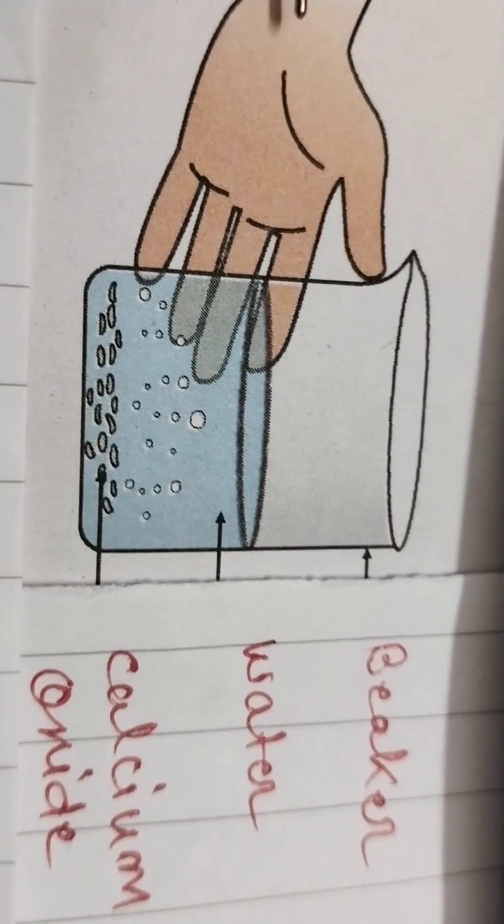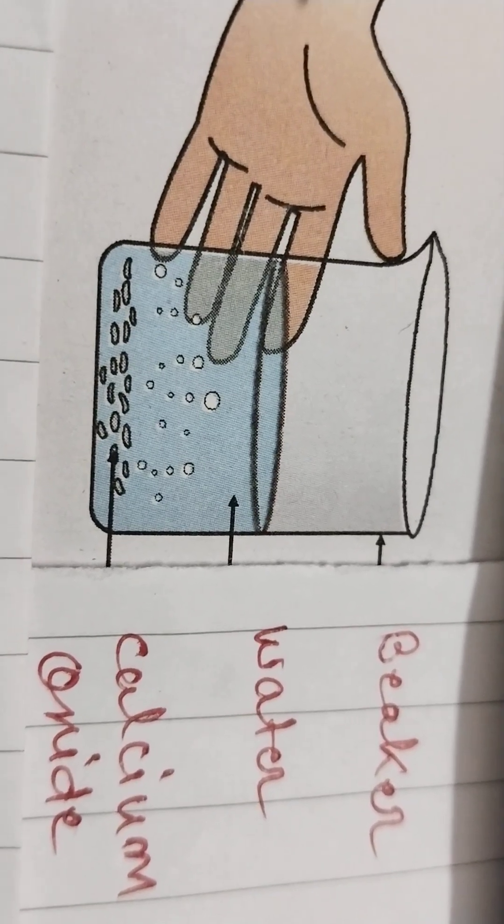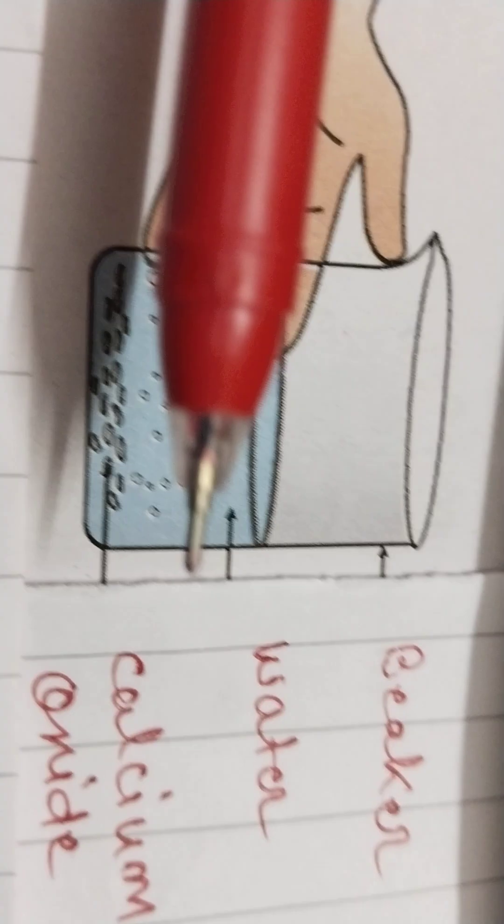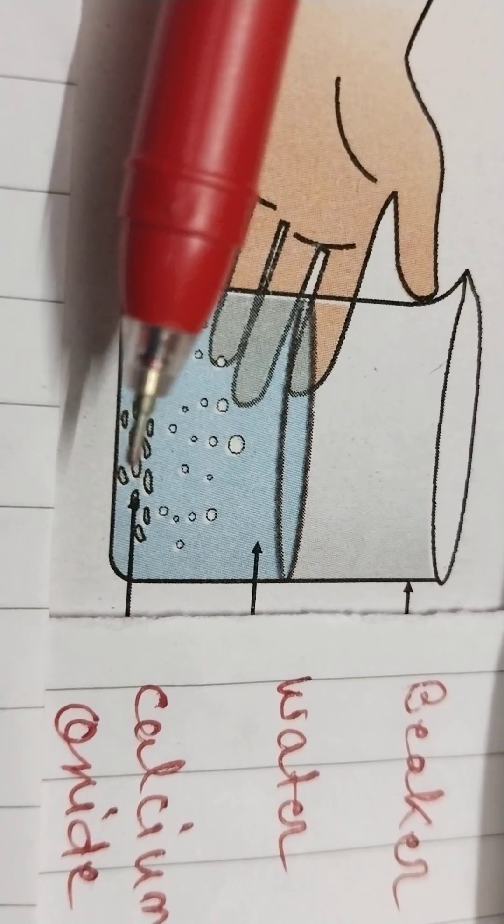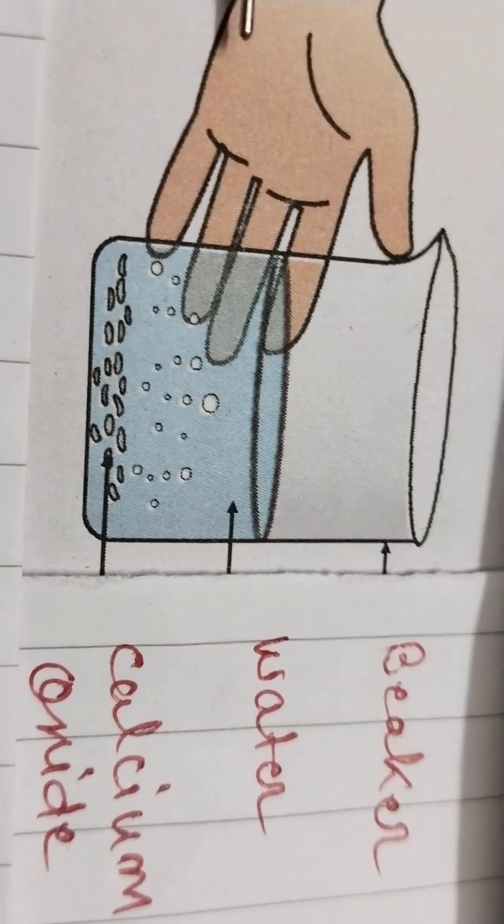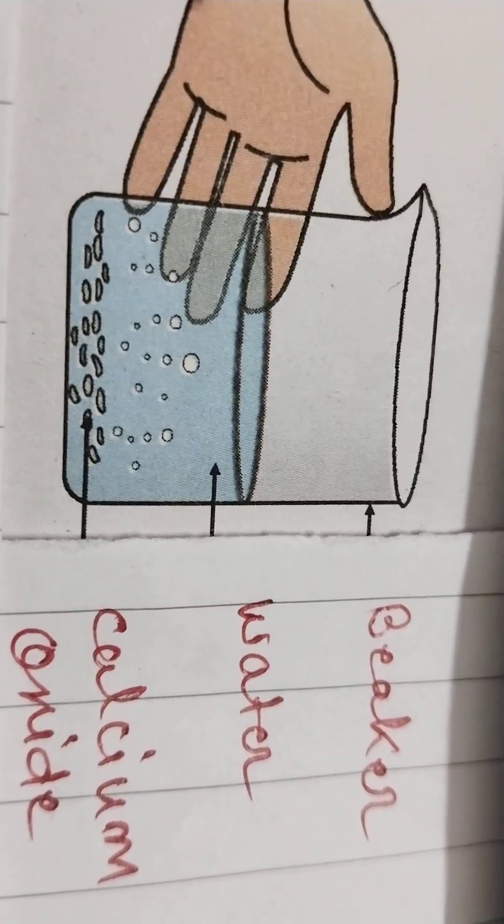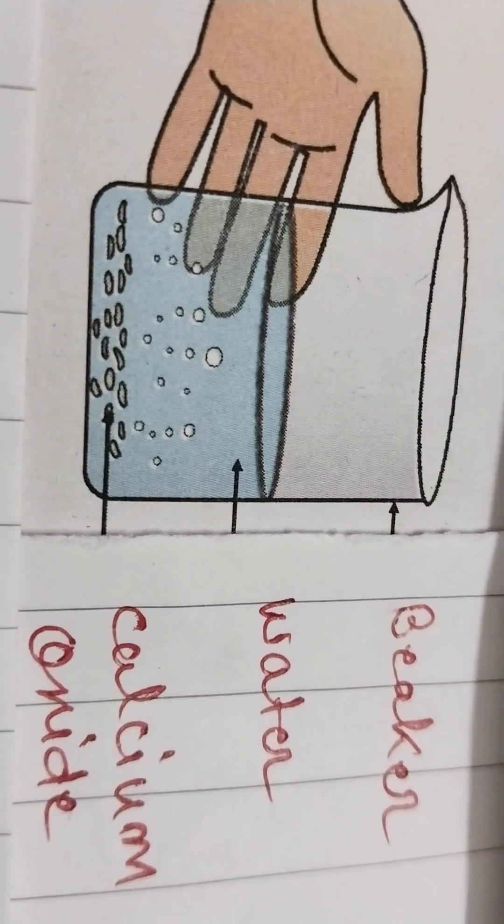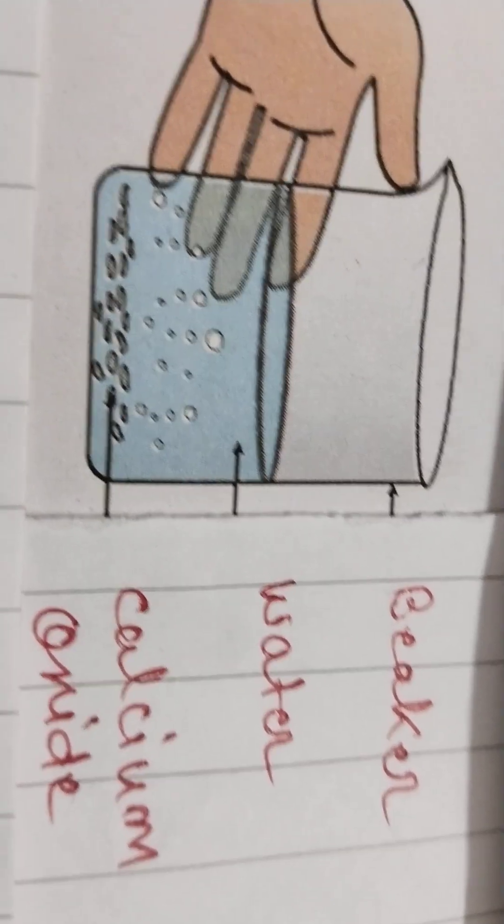When two or more reactants combine to form only one product, this type of chemical reaction is called a combination reaction. Here, there are two reactants: water and calcium oxide.